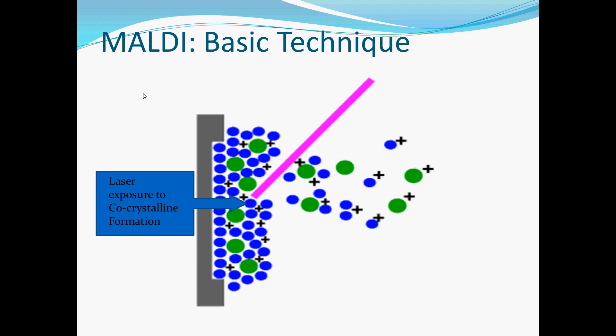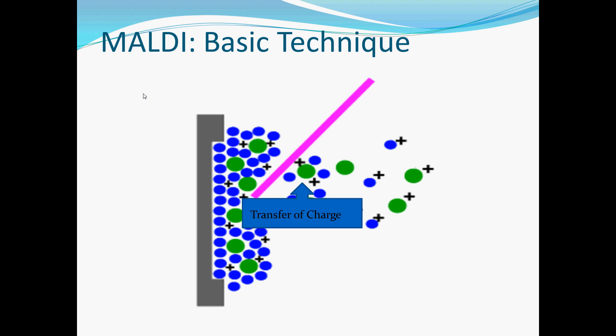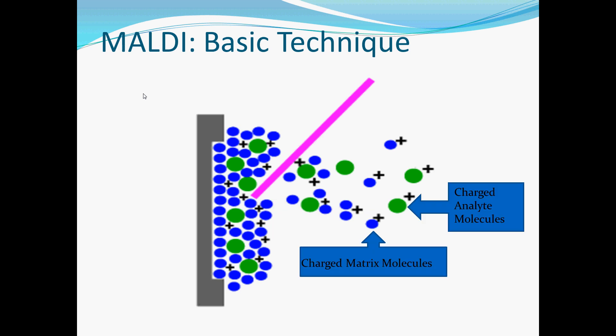This then corresponds with a vibrational relaxation involving a release of energy which then excites and ionizes your sample molecules. This is indicated right here by the transfer of charge. The end result is both charged analyte and matrix molecules.